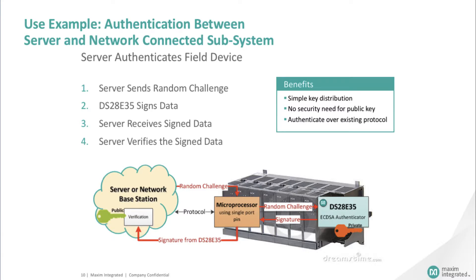Here is an example of authentication between a server and a network-connected subsystem. The benefits this configuration provides are easy key distribution to the customer, no need for security for the public key on their server, ability to authenticate a device to a cloud-based server, and no need to worry about the one-wire protocol.